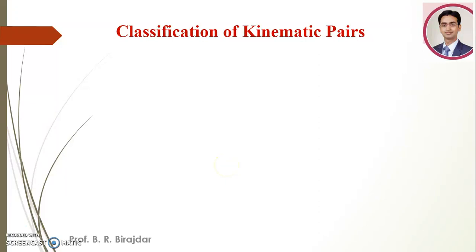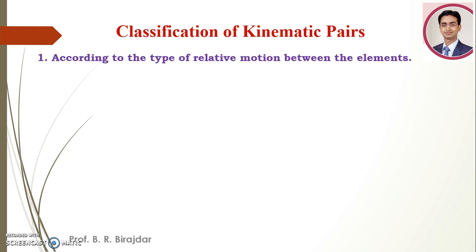Now we will see the classification of the kinematic pairs. These are broadly classified into three types. First we will see the classification according to the type of relative motion between the elements.